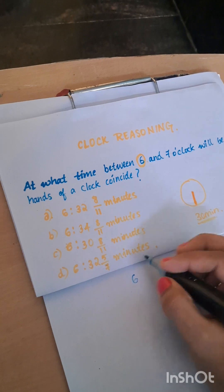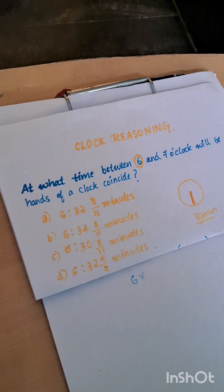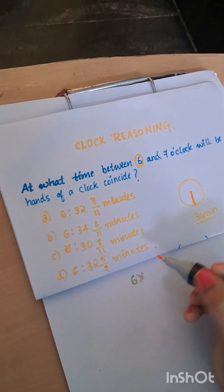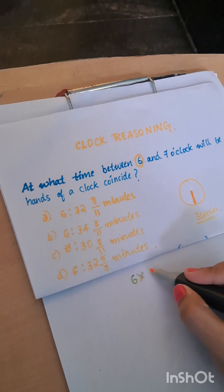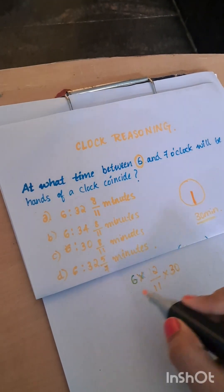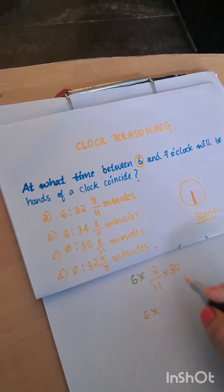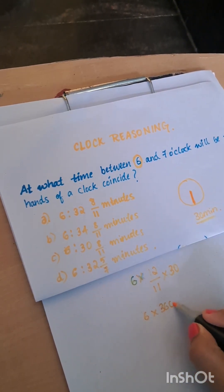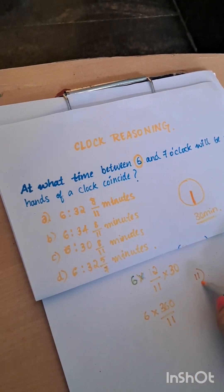Six into, and the formula is 12 by 11 into the minute. The minute is 30. So once you multiply all this, 6 into 360 by 11, once I divide 11 into 36, 11 times 3 is 33.